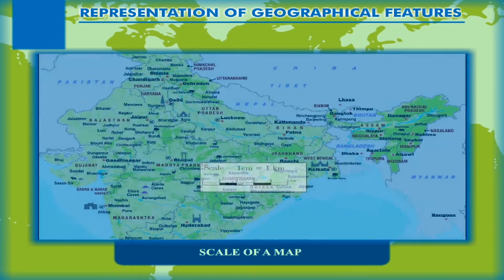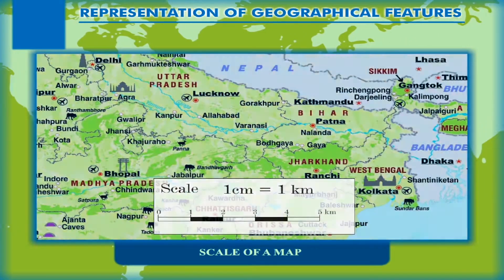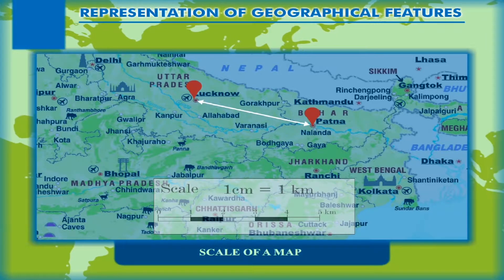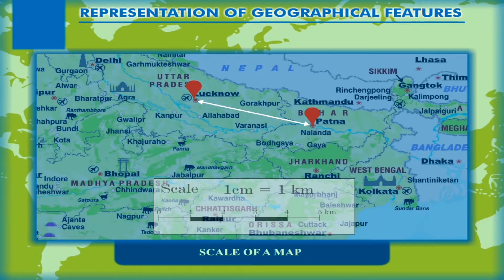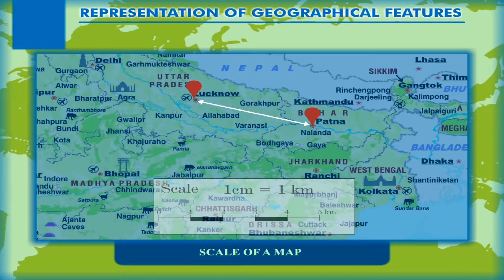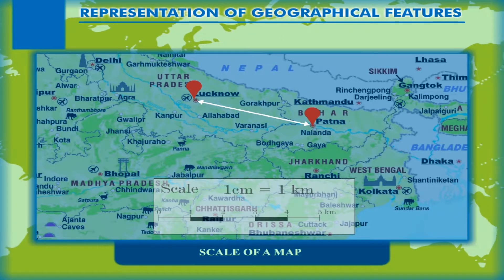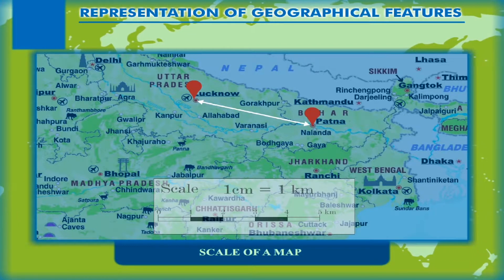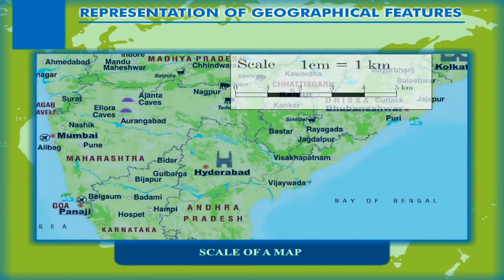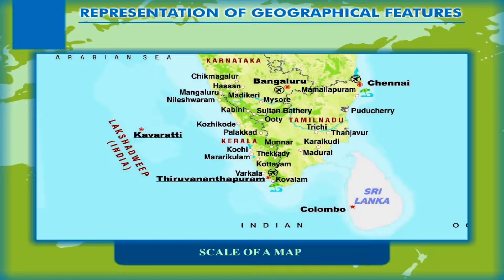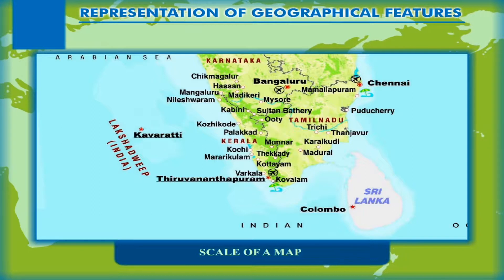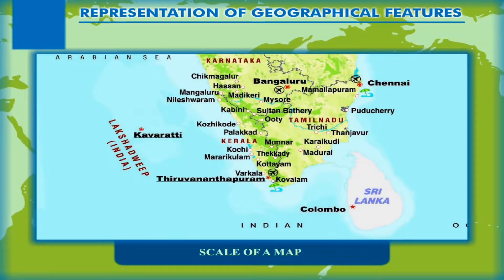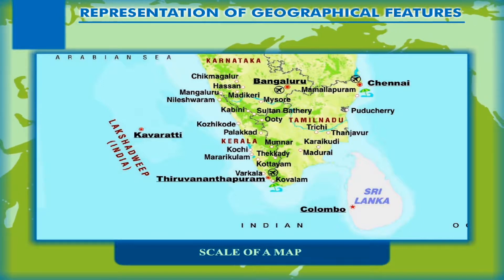The scale of a map — all the features on the map, including the distance between two points, cannot be shown or marked exactly as on the land. Therefore, the area on the ground is reduced proportionately to fit the size of the surface on which the map is drawn. The tool that helps us to reduce the size of the earth and its parts and also calculate the exact distance between two points on the ground as represented on the map is the scale of the map.